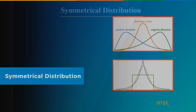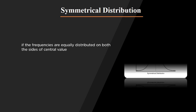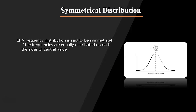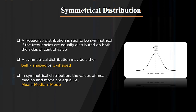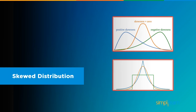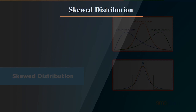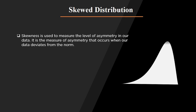A distribution is said to be a symmetrical distribution when it is equally distributed on both sides of the mean value. The distribution shape can either be bell-shaped or U-shaped. In symmetrical distribution, the values of mean, median, and mode are all equal, as you can see in the graph.